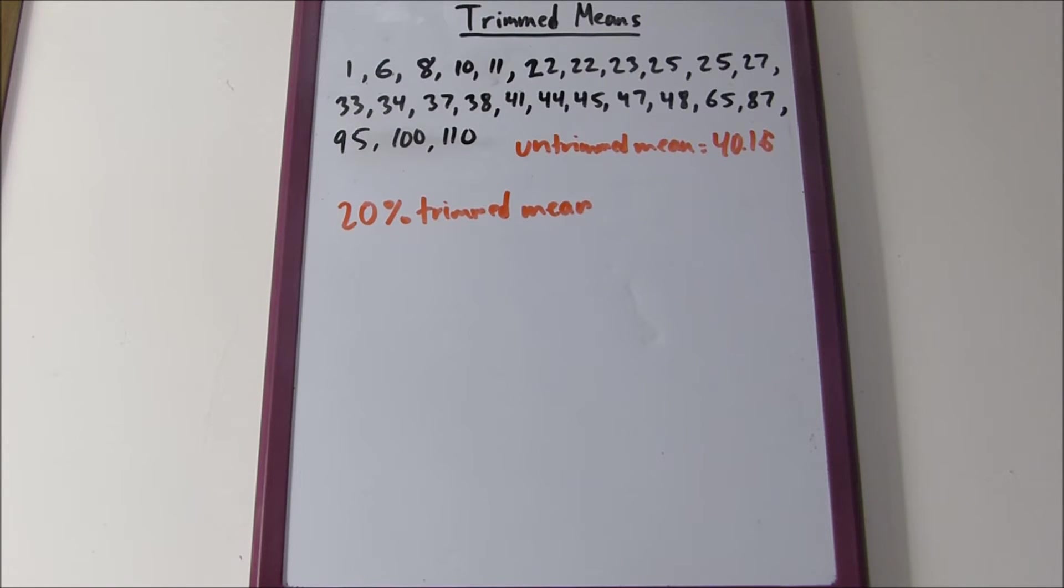Suppose this was a 10% trimmed mean. 10% of 25 is 2.5. Now what you can do here is round up to the next integer, because you can't take off two and a half values. You could take off three. That's an important thing to keep in mind.